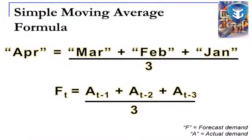To express this more formally: the forecast demand F_T for the current month T equals the actual figure for T−1 (March) plus A_{T−2} (February) plus A_{T−3} (January), all divided by 3. April is represented as F_T — the current month — so March is T−1, February is T−2, and January is T−3. Dividing the sum by 3 gives the forecast demand for April in our example.